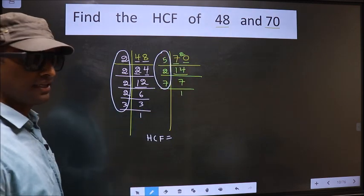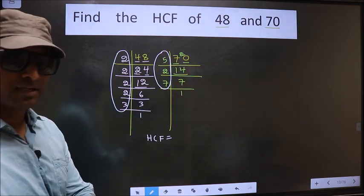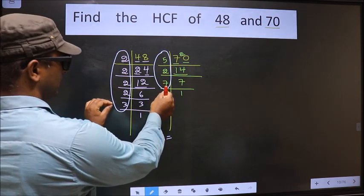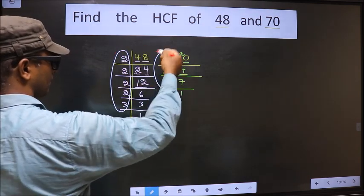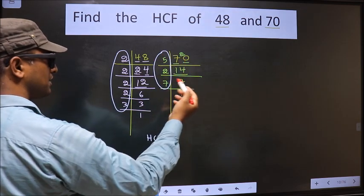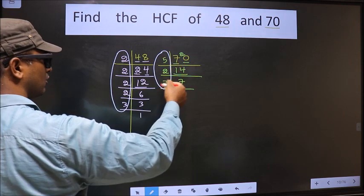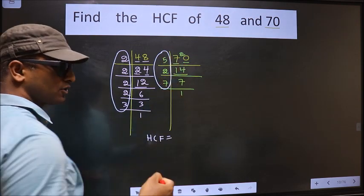I repeat, HCF is the product of numbers which should be present in these 2 places. Now we should find the numbers that are present here and also here. So let us find.